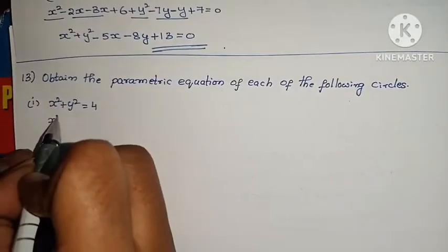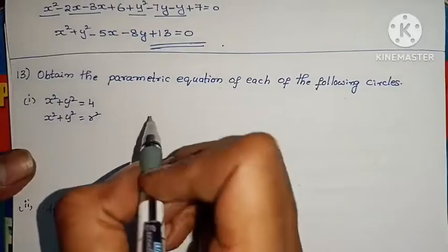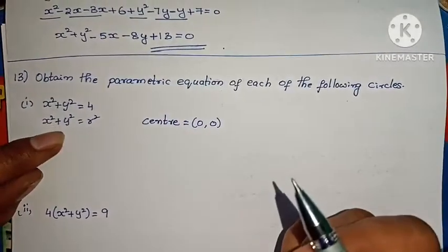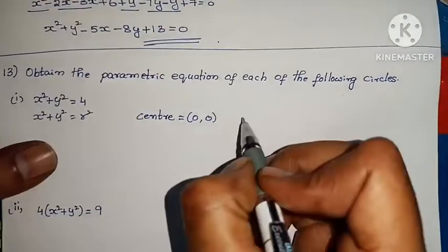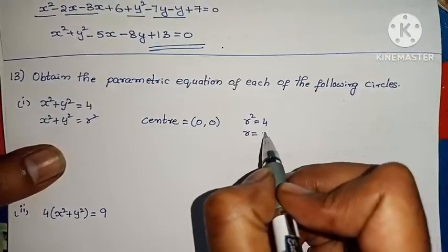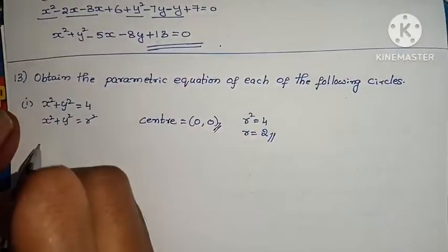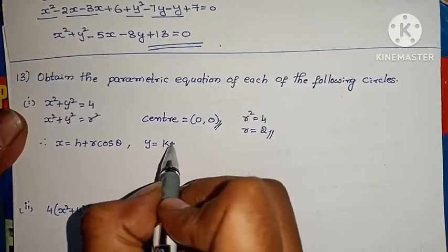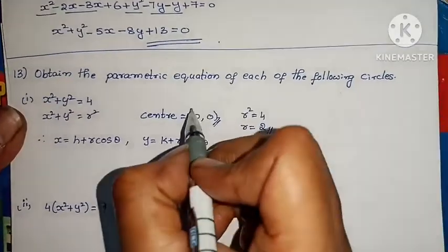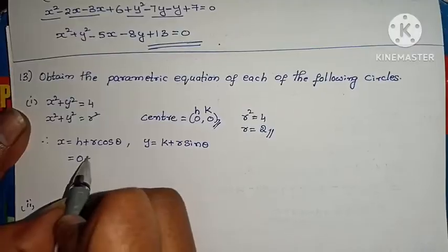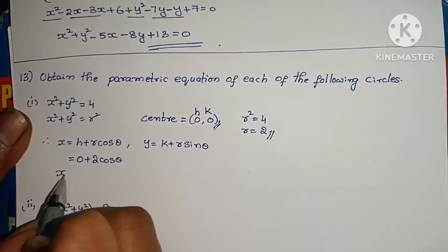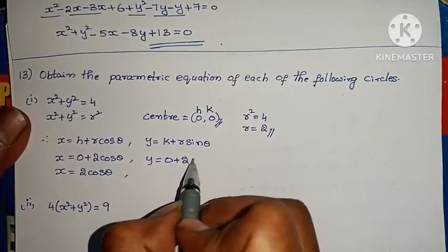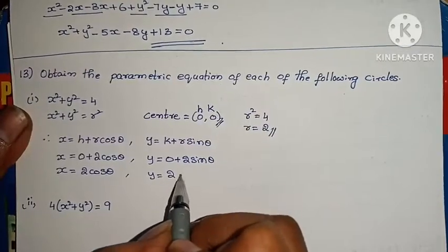For x squared plus y squared equals r squared, the center is (0, 0) since no x or y shift terms are present. If r squared equals 4, then r equals 2. Applying the parametric formula with h equals 0, k equals 0: x equals 0 plus 2 cos theta, so x equals 2 cos theta. And y equals 0 plus 2 sin theta, so y equals 2 sin theta. Parametric equations are complete.